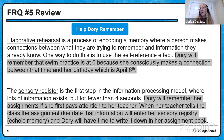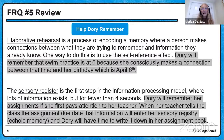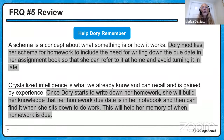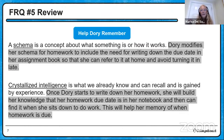The sensory registry is the first line in the information processing model where echoic and iconic memories are very fleeting but can store quite a bit of information. If Dory pays attention when her teacher tells the class about an assignment — so it enters her echoic memory — she will have time to write it down and have a better chance of completing her assignment on time. A schema is our conceptual understanding about the way things work. If Dory modifies her schema to include 'need to write down homework and the due date,' she can refer to it at home and avoid turning it in late.